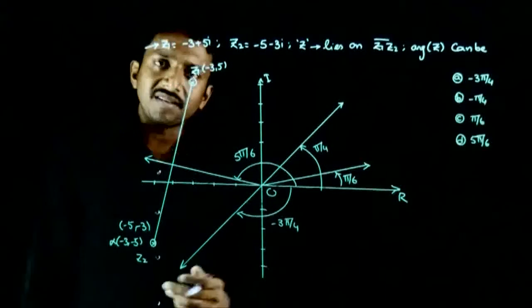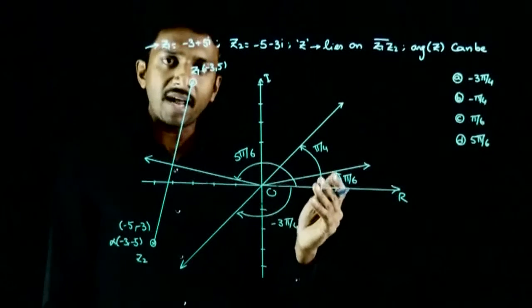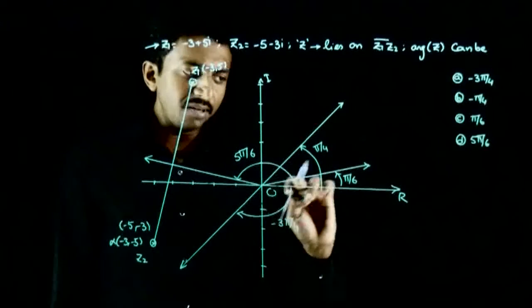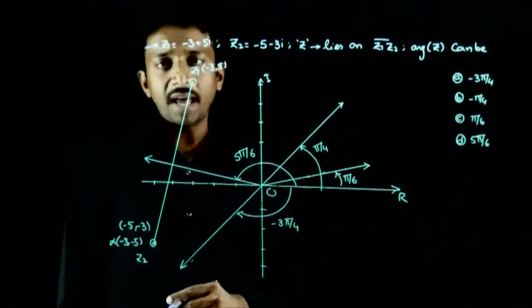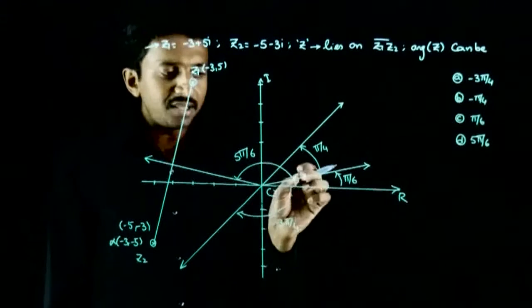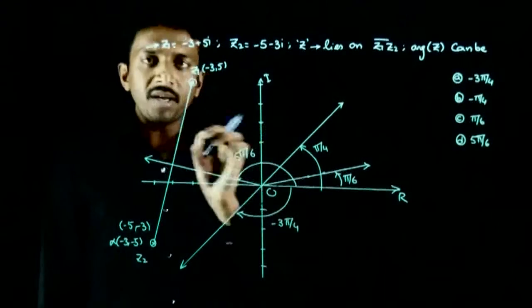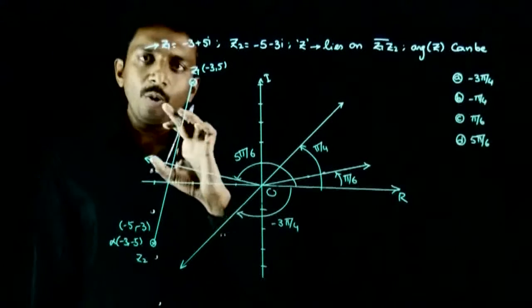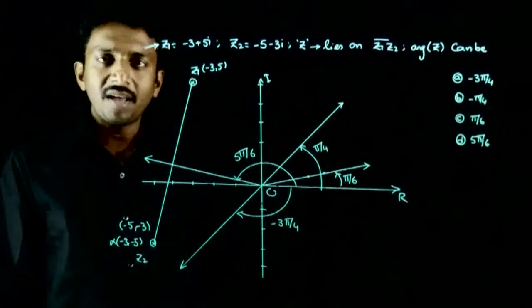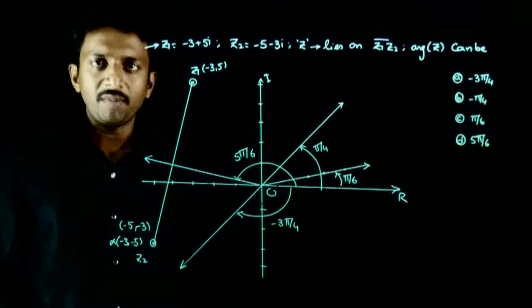If the argument is π/6, the corresponding ray will look like this. Any point on this ray will have argument π/6. But you can see that no point on this ray will be on the line segment. This means no point on this line segment has an argument of π/6.